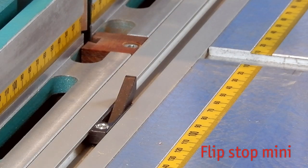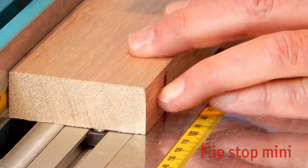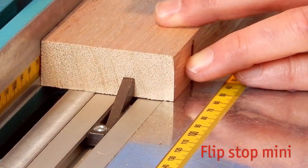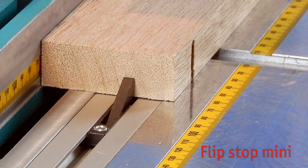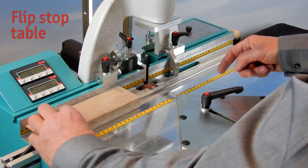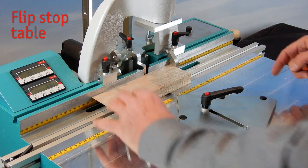The flipstop mini disappears in the rail when not needed, nice and easy and still accurate. For left or right side within the machine table, perfect for repeated accuracy.